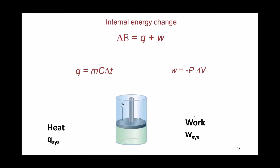The change in internal energy of any system is going to be the sum of the two possible changes of energy that could happen between the system and the surroundings. There are only two possible ways to exchange energy: the first one is heat transfer, Q, and the second one is work — the expansion-compression work. Heat transfer is usually calculated using mcΔT, and work is calculated using the product of pressure times a change in volume. The system is our reference.